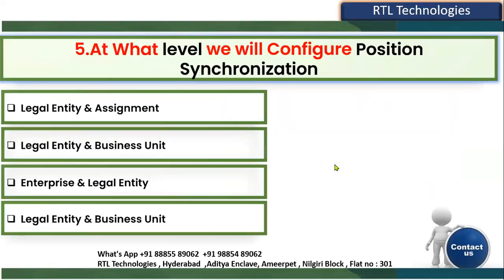The fifth question: at what level do we configure position synchronization? Position synchronization is an important topic in Global HR — it is used to synchronize attributes from the position page. The options are: legal entity and assignment level, legal entity and business unit level, enterprise and legal entity level, or legal entity and business unit. The second and fourth options appear to be the same, so we consider the first three options.